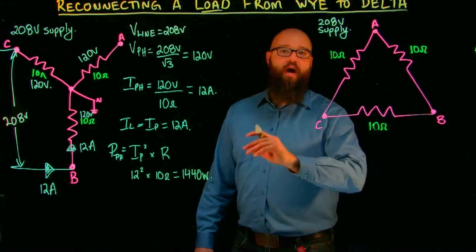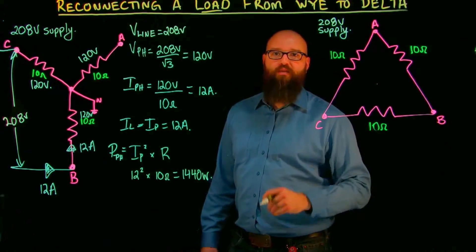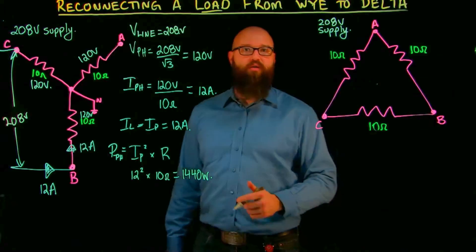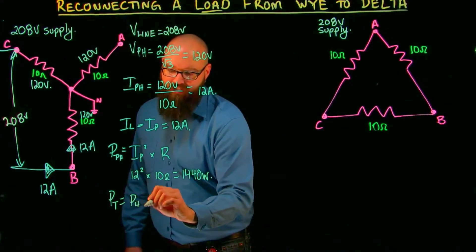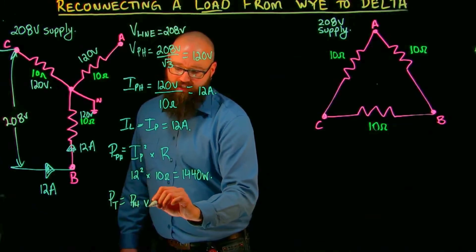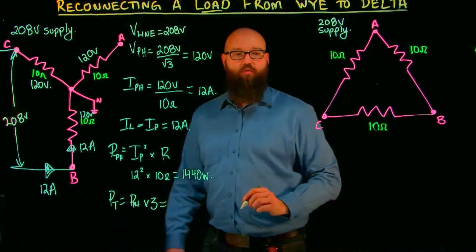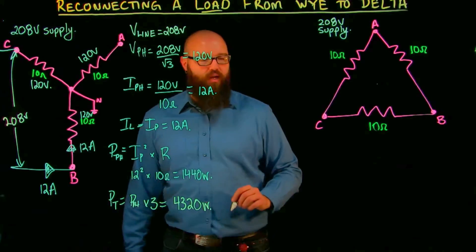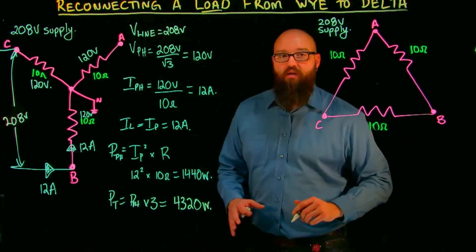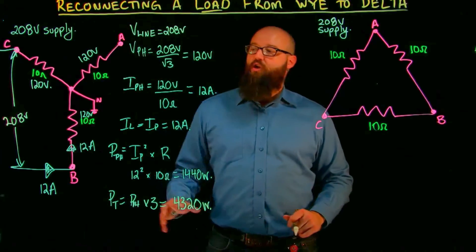And because this is a balanced load, I can simply take the watts per phase and multiply it by three to get total power dissipated. So power total equals power of the phase times three. We should get total power dissipated of around 4320 watts, and that's connected in Y. Now things will change when we take this and flip it over to a delta configuration.